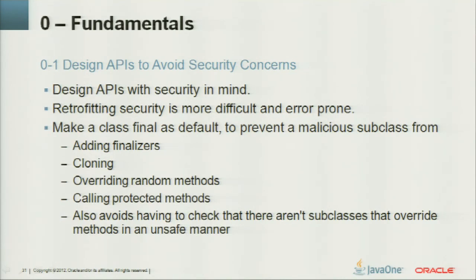Second: design APIs to avoid security concerns. Get security into the design — retrofitting security is costly, error-prone, and difficult. For example, make classes final by default, which prevents a malicious subclass from adding finalizers, performing cloning, overriding, or calling protected methods. Attackers are very creative, so expect the unexpected.